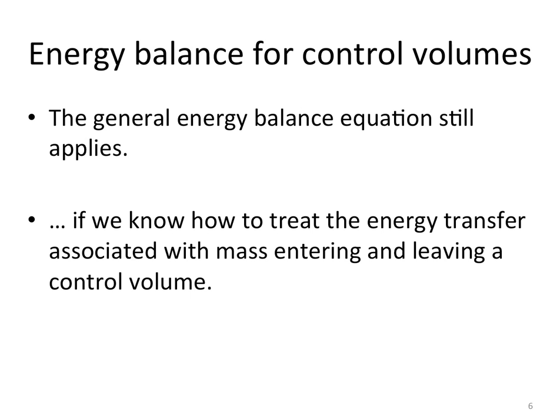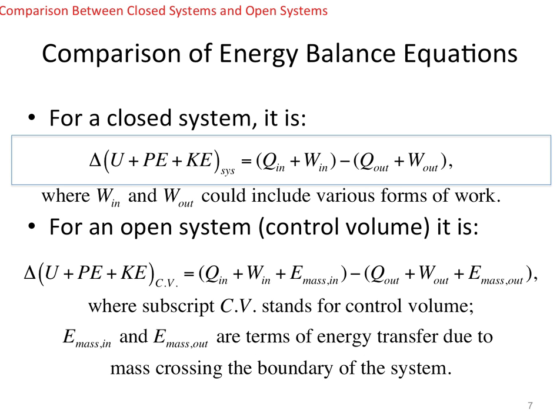Now let's switch to the energy balance for a control volume. The general energy balance equation still applies. However, we need to know what the energy transfer forms are associated with a control volume, especially the energy transfer due to mass entering and leaving. For a closed system, the change in the system's energy — internal, potential, and kinetic energy combined — equals the difference between q_in and w_in minus q_out and w_out.